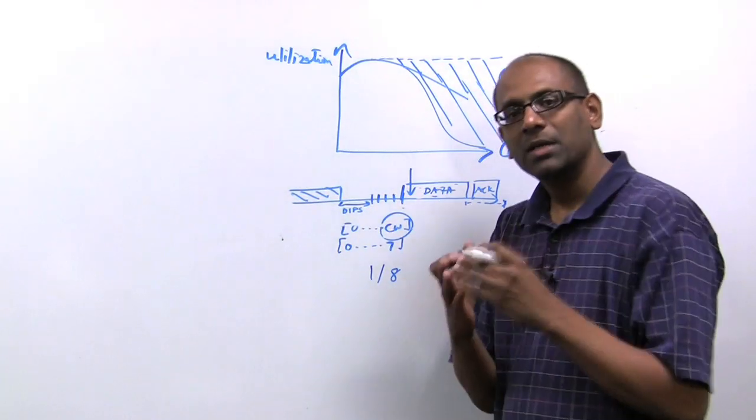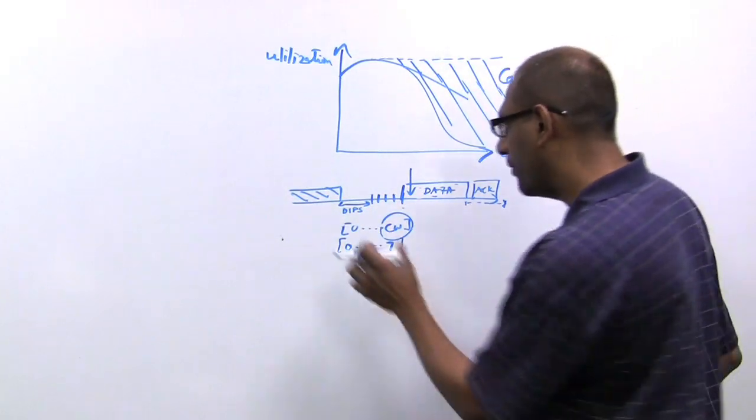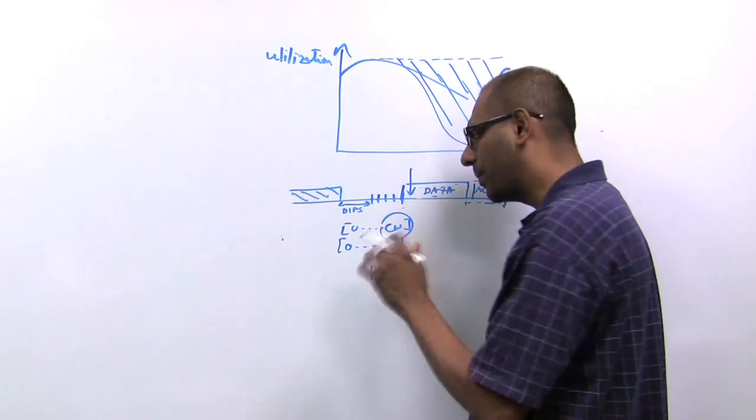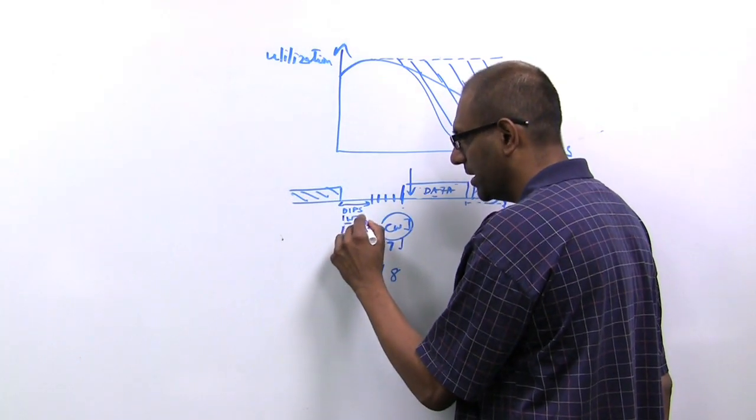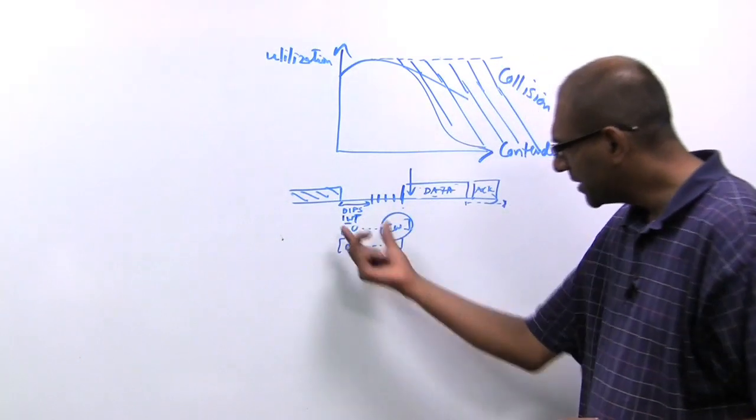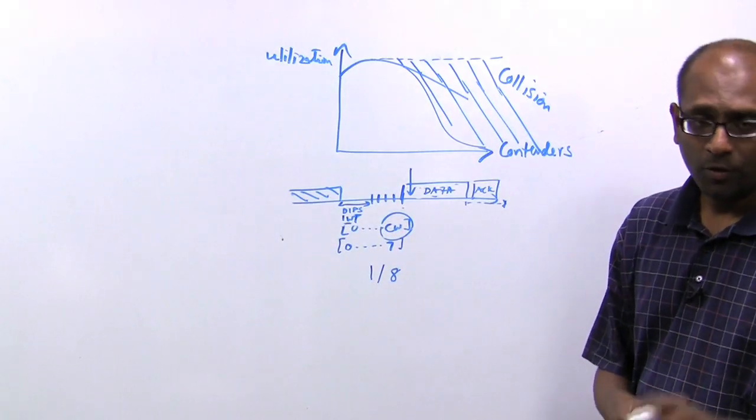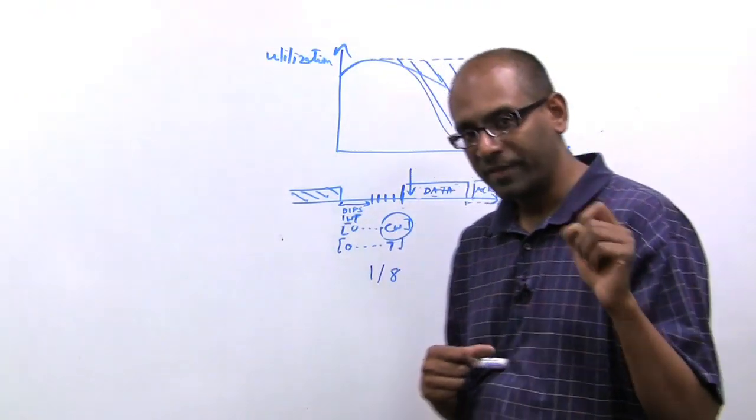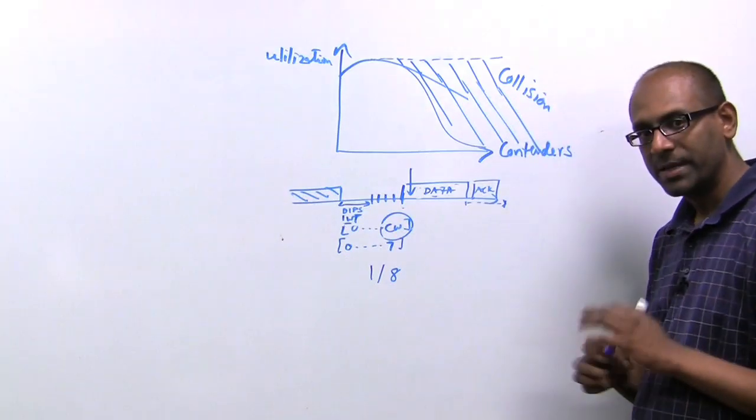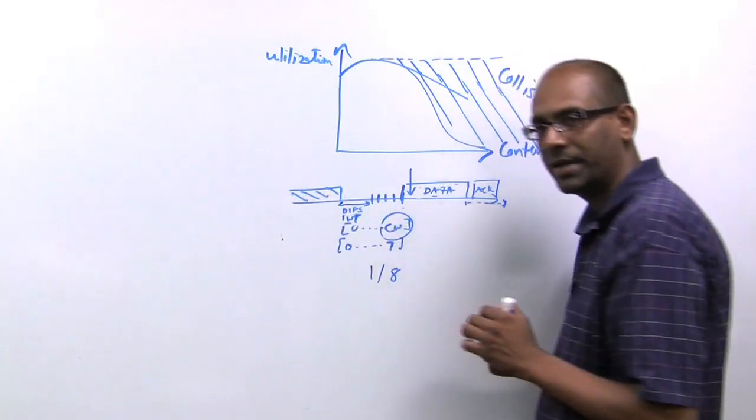And since then, with WMM, depending upon the class of service, you might have different amount of wait time. So for the purpose of this discussion, let's just call it an initial wait time. And this value is adjustable. For those of you more technically inclined, go look up AIFS, which is an arbitrary interframe spacing, and that maps to this initial wait time.